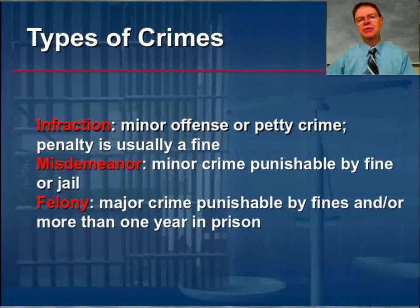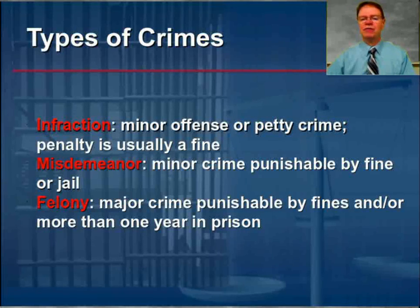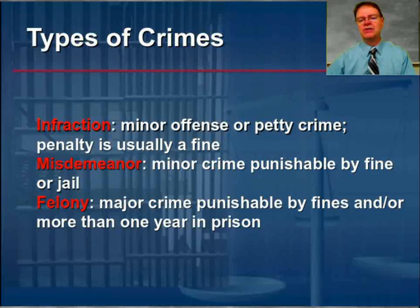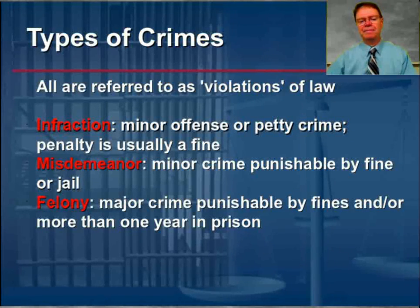There are basically three types of crimes, listed here in terms of increasing severity. First, an infraction — a minor offense, a petty crime, something similar to a parking ticket. You don't appear in court unless you're going to appeal that infraction. Next, there are misdemeanors — more serious crimes punishable by a small fine or a short jail sentence; some, like shoplifting, result in fingerprinting. Third is the felony — a major crime punishable by fines and/or more than one year in prison, such as stealing a car or threatening someone with bodily harm.